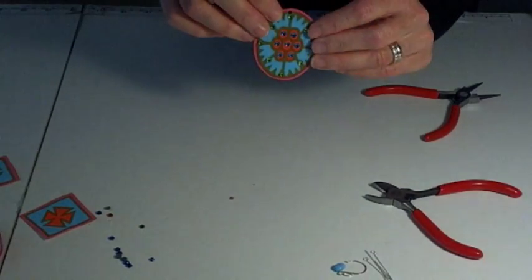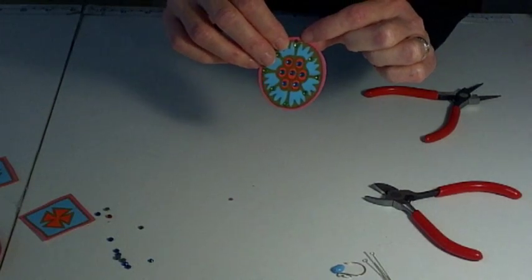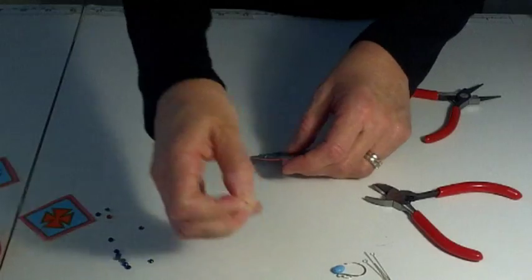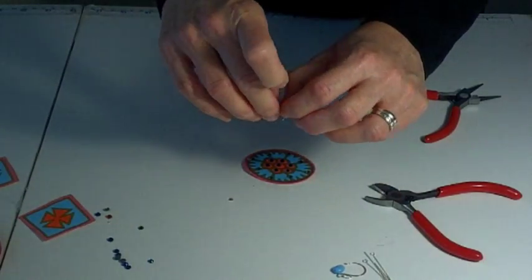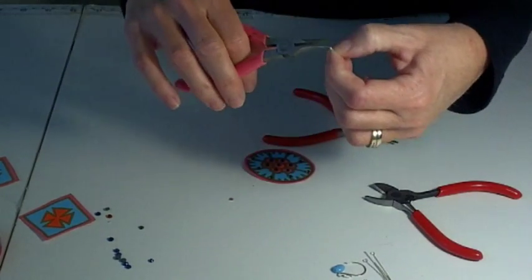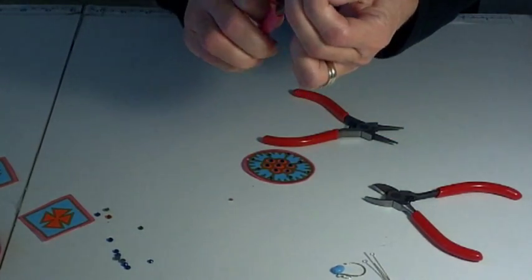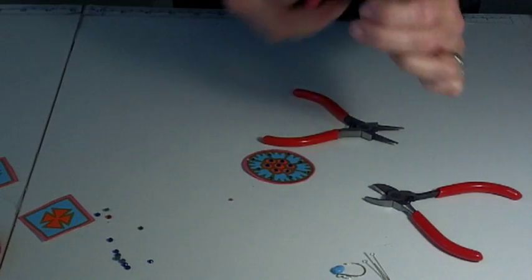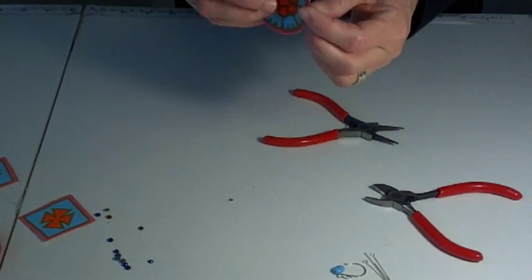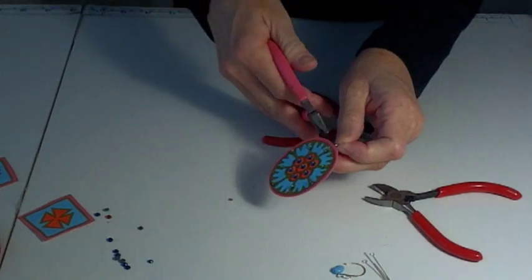So now you have your hole at the top of your piece and the next thing you're going to do is you are going to add a jump ring. I like these oval jump rings. You can just get them at the craft store, no specific brand. You're going to open it up just a little bit and then go ahead and place it onto your piece. We'll go ahead and close it.